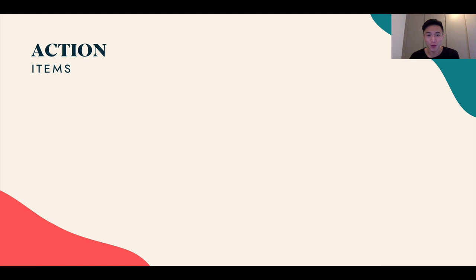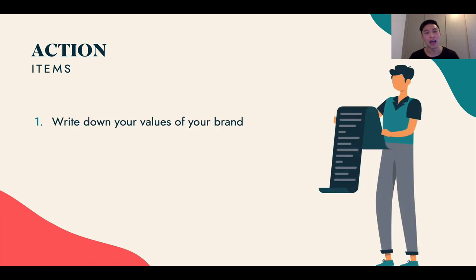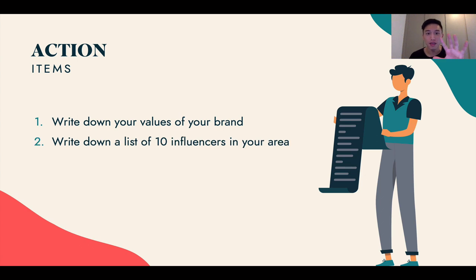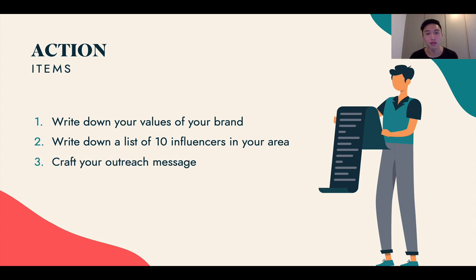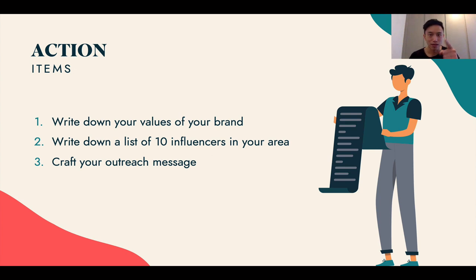Here are your action items. First, write down your values for your brand — if you don't know how, dive into module one. Second, uncover 10 influencers in your area using the rabbit hole method I just showed you, and jot down their follower counts. Third, craft your outreach message using the ADA formula and the WIIFM formula — understand what's in it for them and craft that message. That is the end of the presentation. I hope you enjoy this bonus, and I'll see you in the modules.